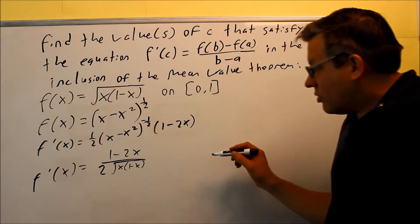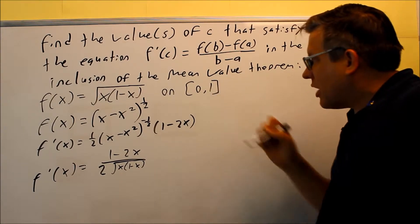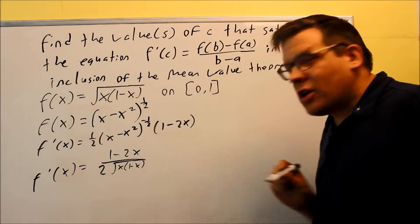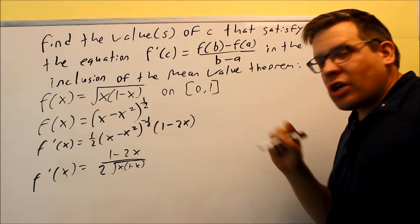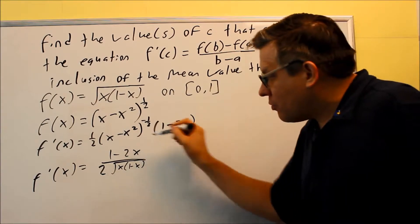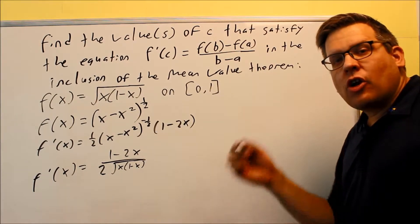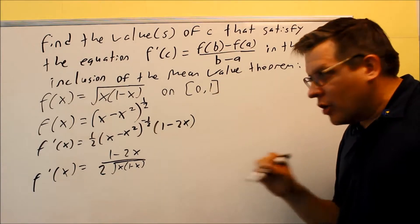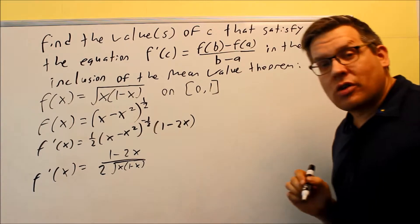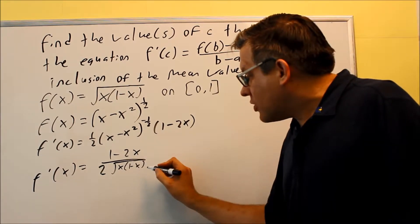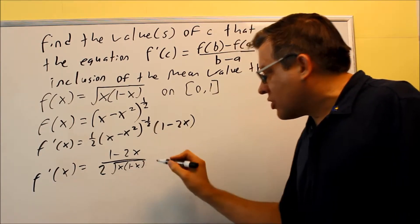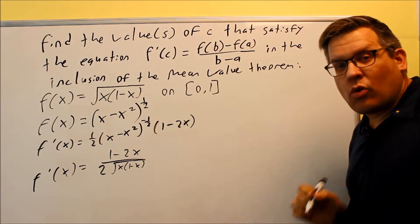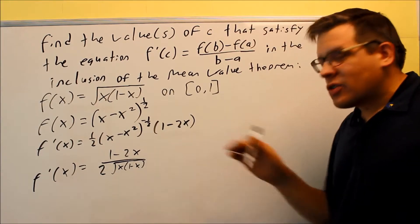So now I need to check to make sure this satisfies the mean value theorem. Now I know that if I put 0 and 1 into here, I'm going to get a 0. However, remember that when you check for differentiability with mean value theorem, you're considering the open interval. So we're not actually including the end points from 0 to 1. So actually, this is still going to satisfy the mean value theorem. Because even though I get zeros and division by zeros undefined, I'm not including those. So as long as I pick numbers in between 0 and 1, it's going to be continuous.